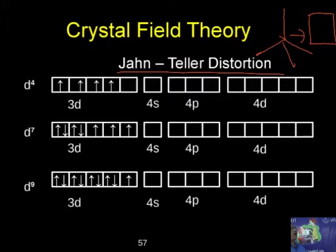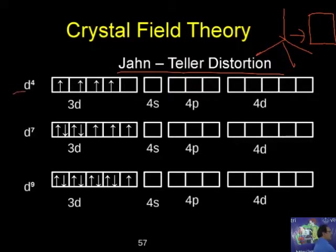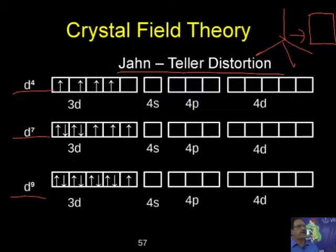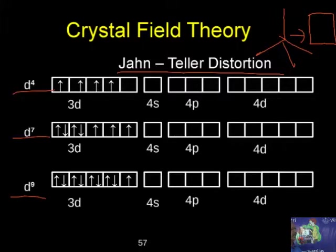Now I will explain how. Jahn-Teller distortion occurs in metal ions with d4, d7, and d9 configurations. If any metal ion has these configurations, Jahn-Teller distortion will be displayed. Elements having d4, d7, and d9 configurations will not obey normal hybridization and shape predictions.